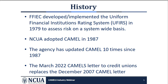Since NCUA began using the CAMEL rating system, it periodically modified CAMEL to respond to changes in the financial services industry as well as supervisory policies and procedures. Since 1987, NCUA updated CAMEL 10 times, each time informing credit unions of changes through a letter to credit unions. The March 2022 CAMELS letter to credit unions will replace the currently effective CAMEL letter issued in December 2007.